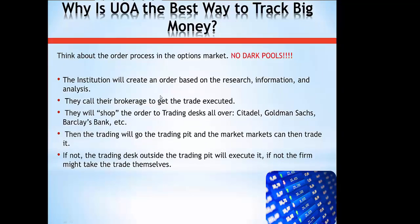Here's how unusual option activity is created. An institution comes up with an order based on their research, analysis, and information. Then they go to their options person, who recommends a strategy. Based on their research and analysis, they call their broker — Goldman Sachs, Citadel, Barclays, Merrill, or Morgan — and say this customer wants to do this trade. The trade is then taken to the trading pit where it is executed and recorded by the OCC and the SEC. Once that trade is executed, I will see it on my scanner, and I can react and decide if it's a position I want to allocate my capital toward.